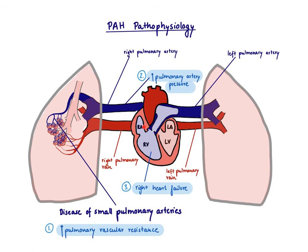As a consequence, the right atrium also needs to create more pressure to generate the preload to help the right ventricle work. So we now have increased pressure in the right atrium as well. Eventually, there's also going to be pressure backing up into the body's veins. The first sign is distended neck veins, and later you can also see peripheral edema. These are all typical symptoms of right heart failure.